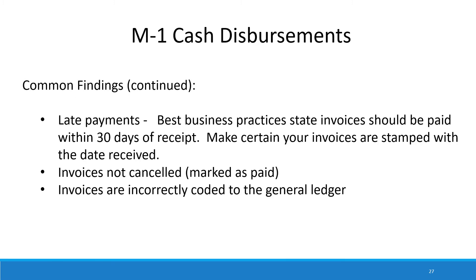Some other things we see are late payments. We ask that your invoices be paid within 30 days of receipt, and to ensure this, any incoming invoices should be stamped with the date received. In instances where you are unable to pay invoices on time — due to COVID or a delay with a weatherization invoice — we ask that you put the reason on your voucher or invoice explaining why you paid late. That will keep us from having to go back and ask questions. If there's a reasonable explanation, we will not make a note of it. Also, invoices should be marked or stamped as paid, and we find many invoices that are incorrectly coded to the general ledger.